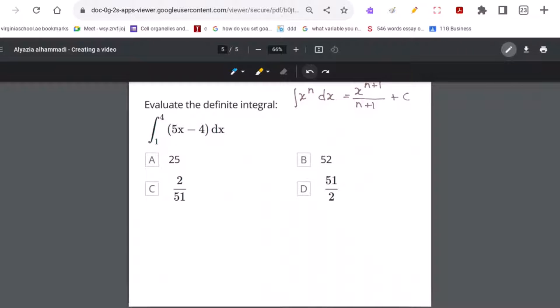Evaluate the definite integral from x equals 1 to x equals 4 of 5x minus 4 dx by applying the power rule of integration.